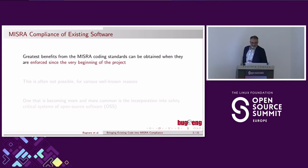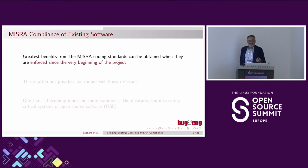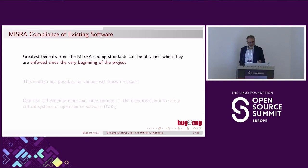The MISRA coding standards are indirectly referred to by the functional safety coding standard in the part where they say you should use a safe subset of a standardized language. C and C++ are standardized by ISO, and they have many features that are dangerous for different reasons. So MISRA-C and MISRA-C++ are the most authoritative subsets of C and C++.